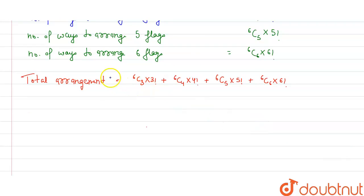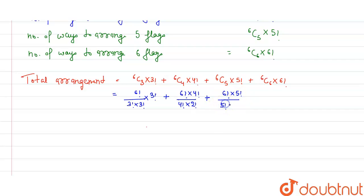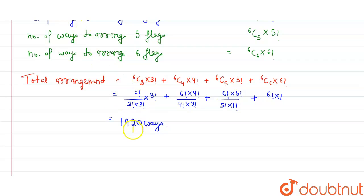Simplifying: 6!/3! divided by 3! into 2 factorial, plus 6! divided by 4! into 2 factorial, plus 6! divided by 5! into 1 factorial, plus 6C6 which becomes 1 so we write 6! into 1. After solving, we get 1920. So the total number of ways to make signals using at least three flags is 1920.